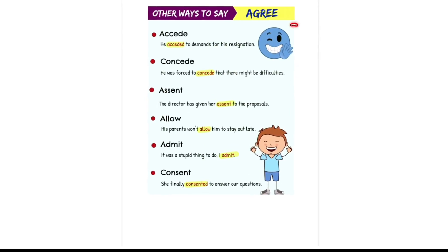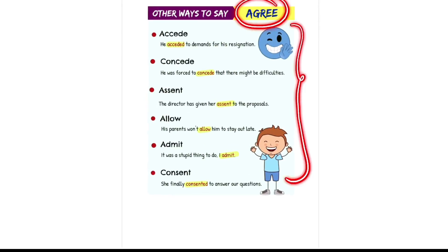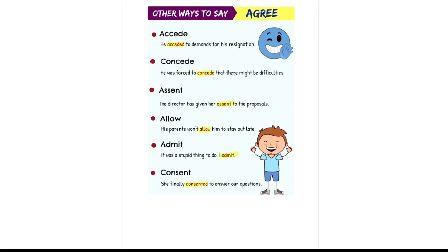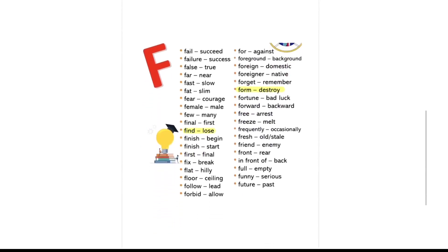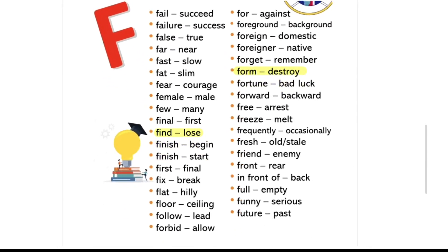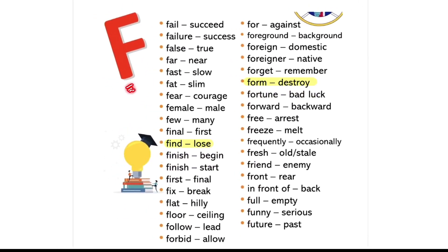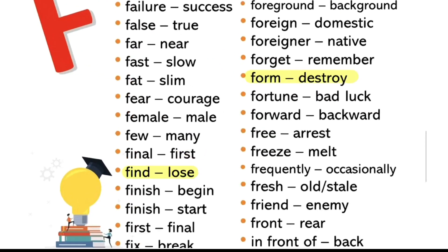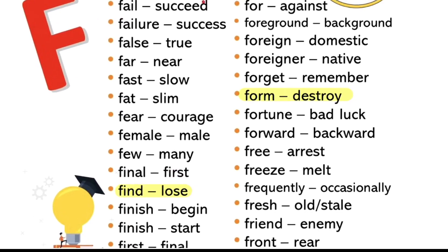So these are other ways to say the word agree. Now some antonyms. Antonyms with the letter F. Antonyms ka matlab opposite, vipreet, vilom. For example, fail or succeed — fail, succeed.